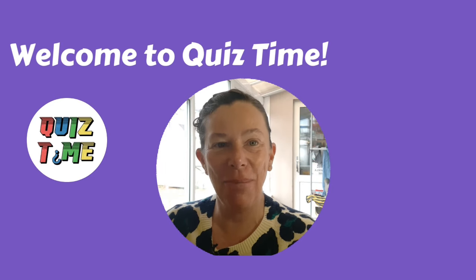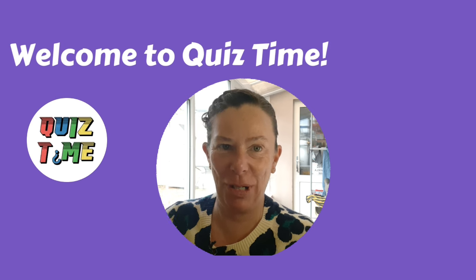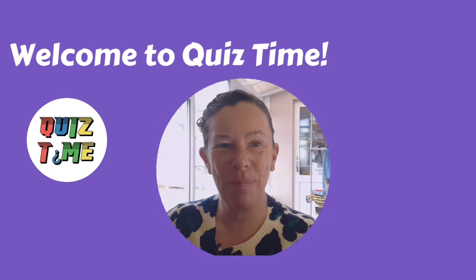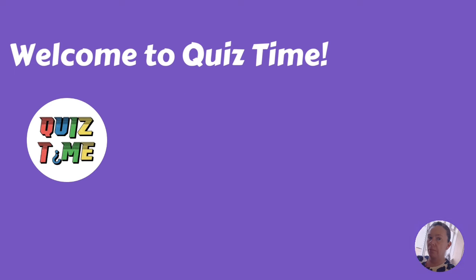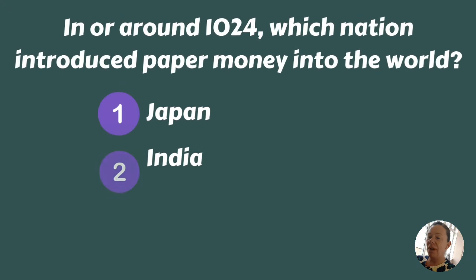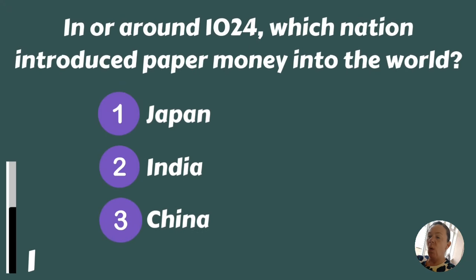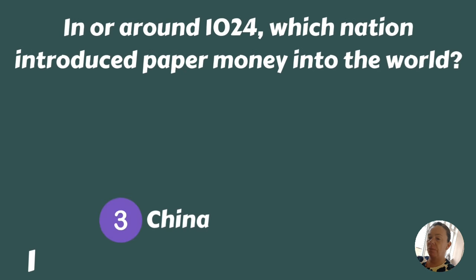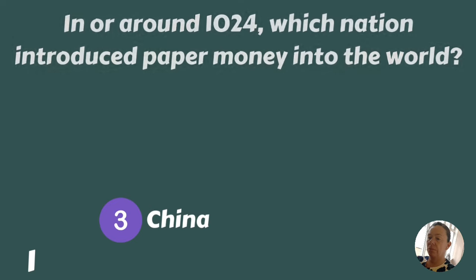Hello, welcome to Quiz Time. I'm Jess, and today I have a history quiz for you. Are you ready? Let's go! In around 1024, which nation introduced paper money into the world — Japan, India, or China? It was China.